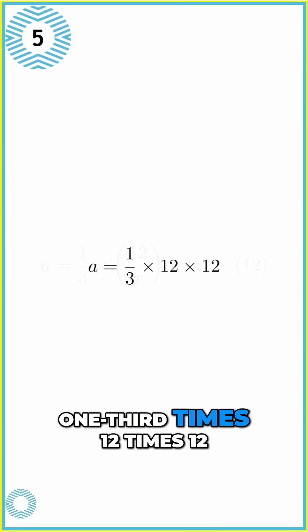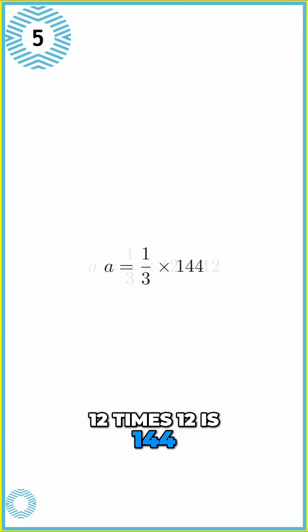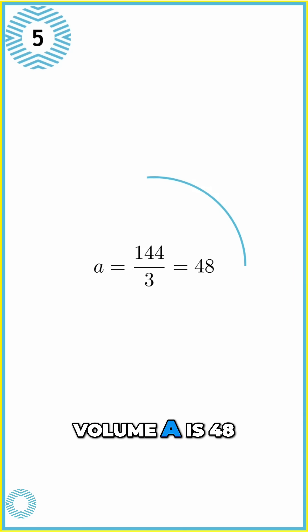12 times 12 is 144. And one-third of 144 is 48. So volume A is 48.